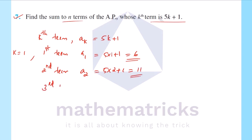For the third term, a3 equals 5 into 3 plus 1, that is 15 plus 1, that is 16.